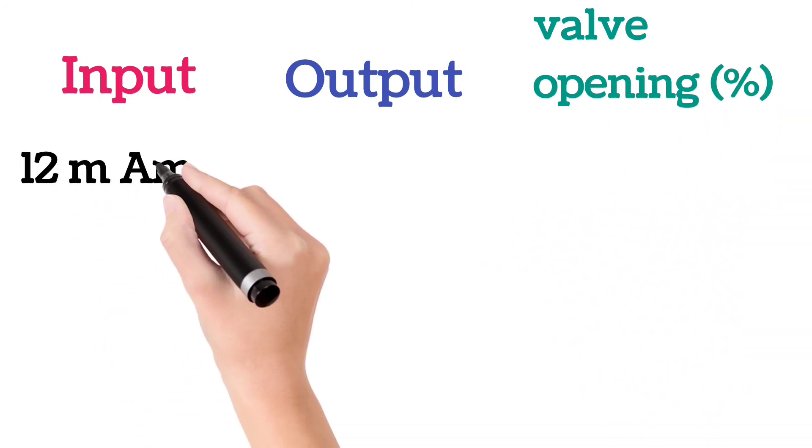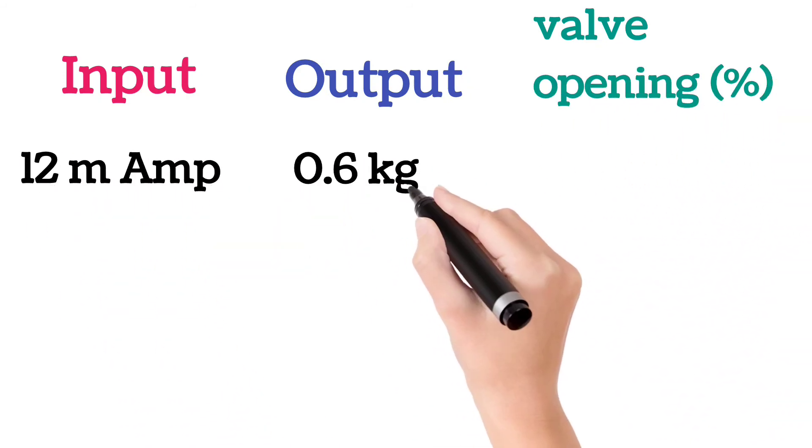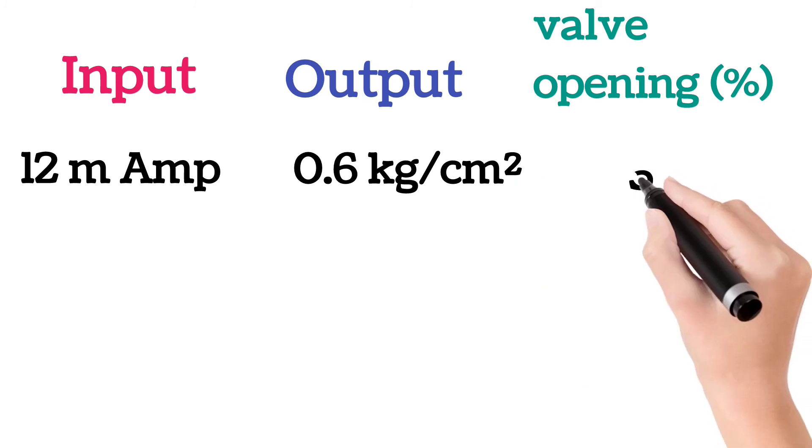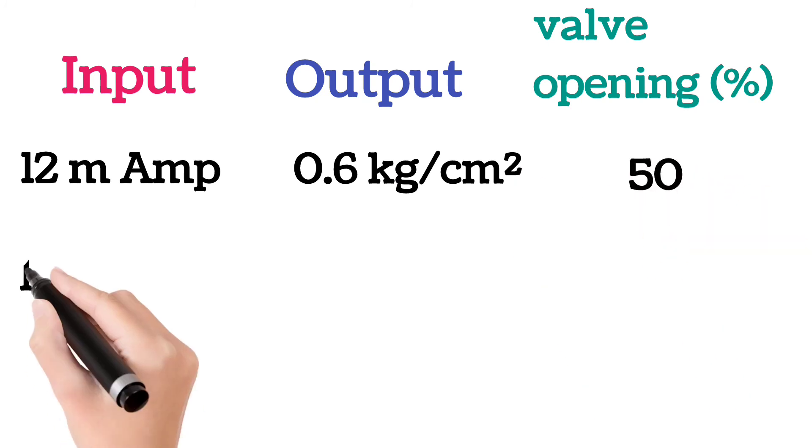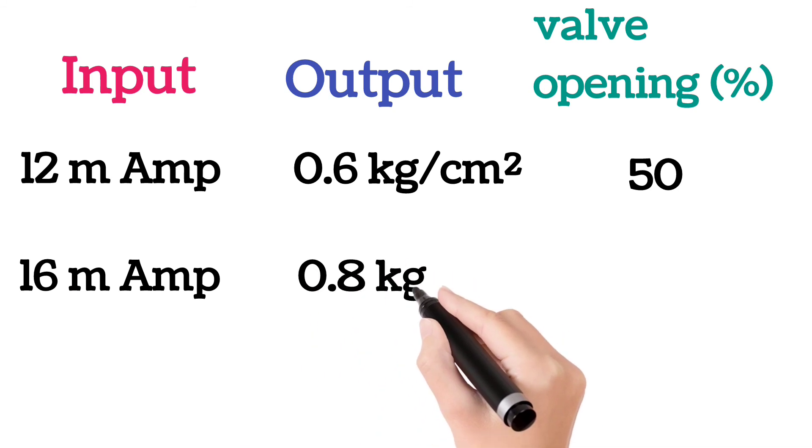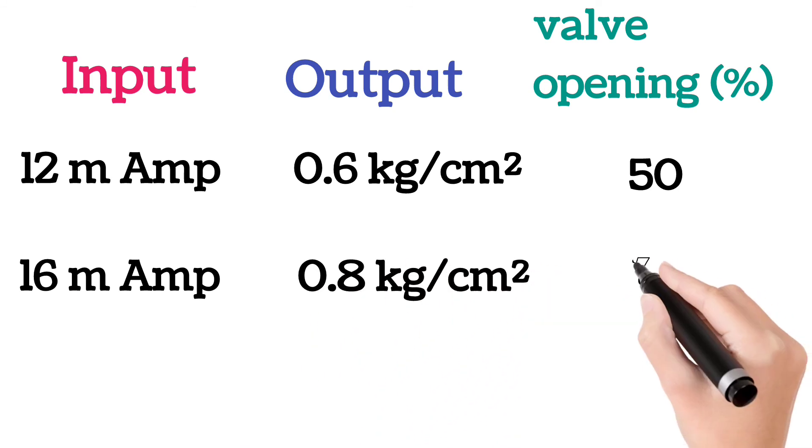at 12 milliamps, its output is 0.6 kg per square centimeter and valve opening is 50%. At 16 milliamps, output is 0.8 and valve opening is 75%.